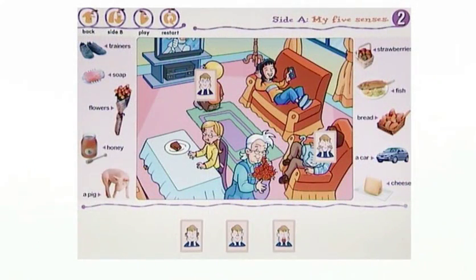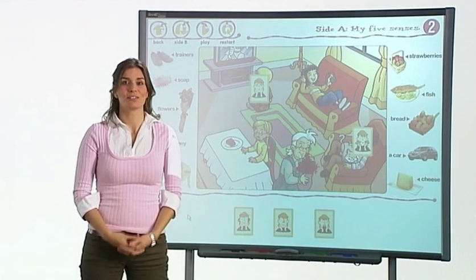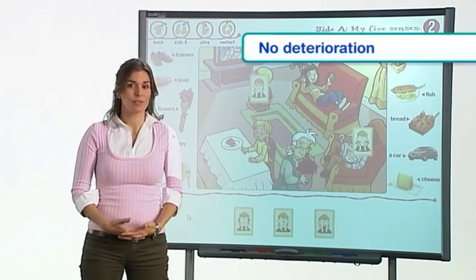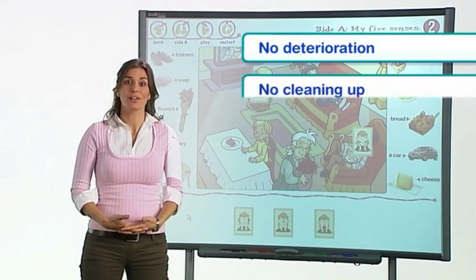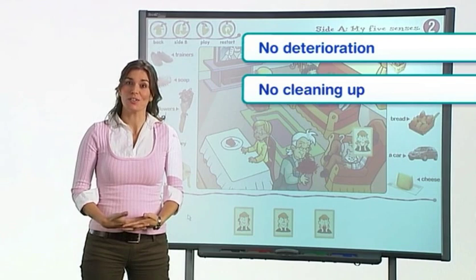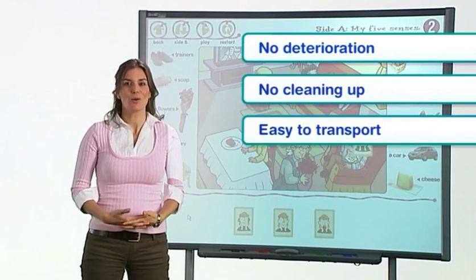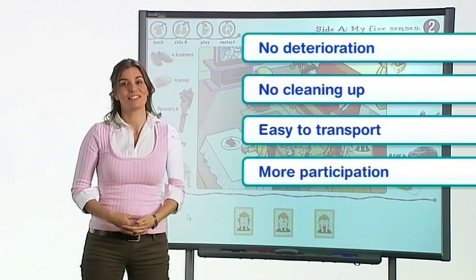Richmond has digitalised the traditional resources which normally accompany a primary course and this has several advantages. Digital material does not deteriorate with use. There is no need to tidy away or organise the materials at the end of the class. It is much easier to transport from one classroom to another and it also allows the children to participate much more in activities.